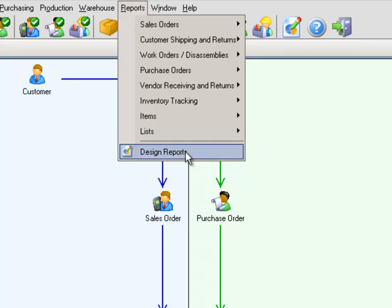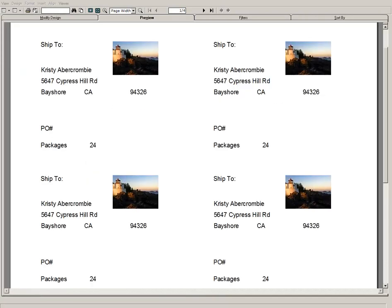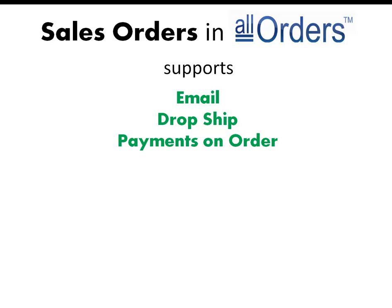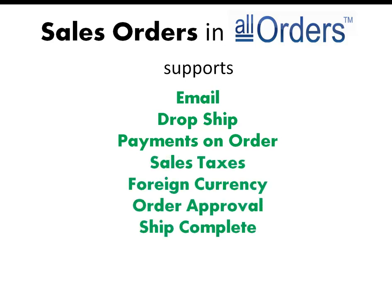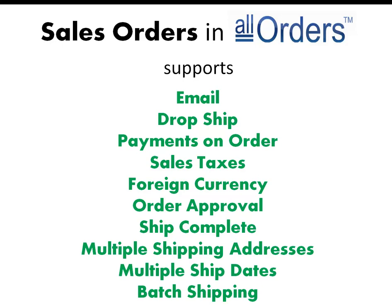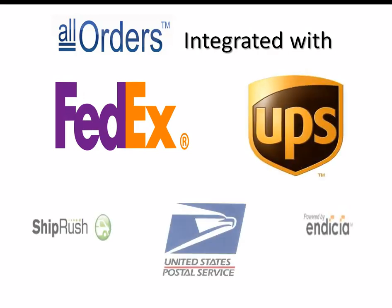Print all sorts of reports such as sales orders, pick tickets, and shipping labels from All Orders. Sales orders in All Orders support email, dropship, payments on order, sales taxes, foreign currency, order approval, ship complete, multiple shipping addresses, multiple shipping dates, and batch shipping. It is also integrated with FedEx, UPS, and more.